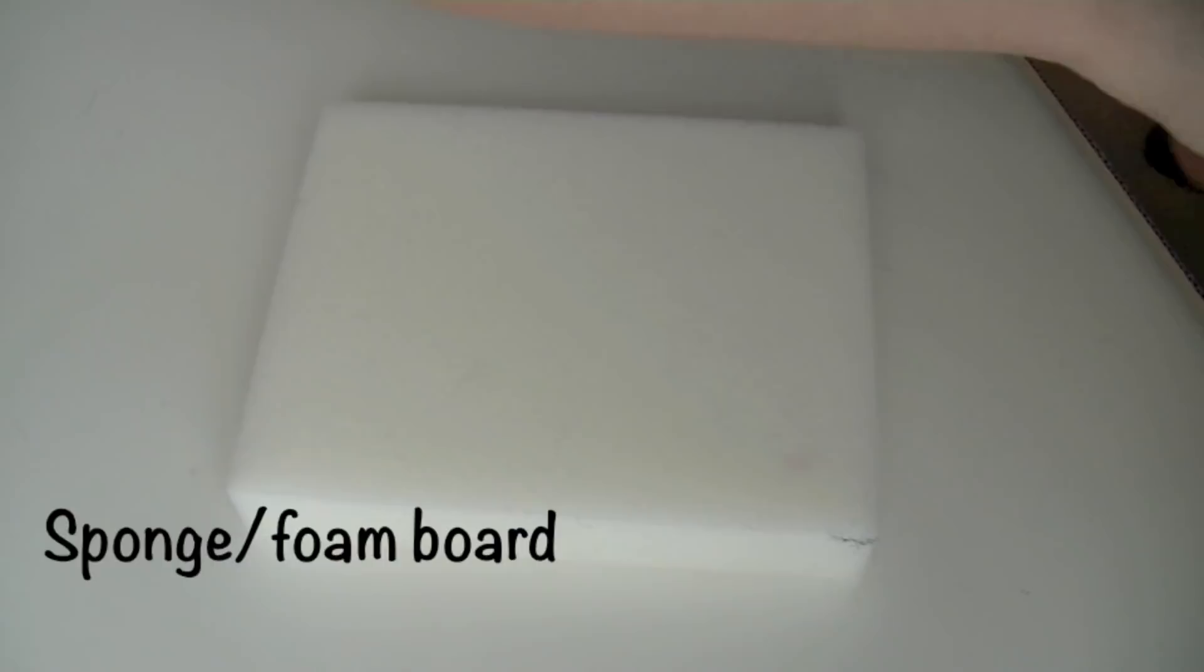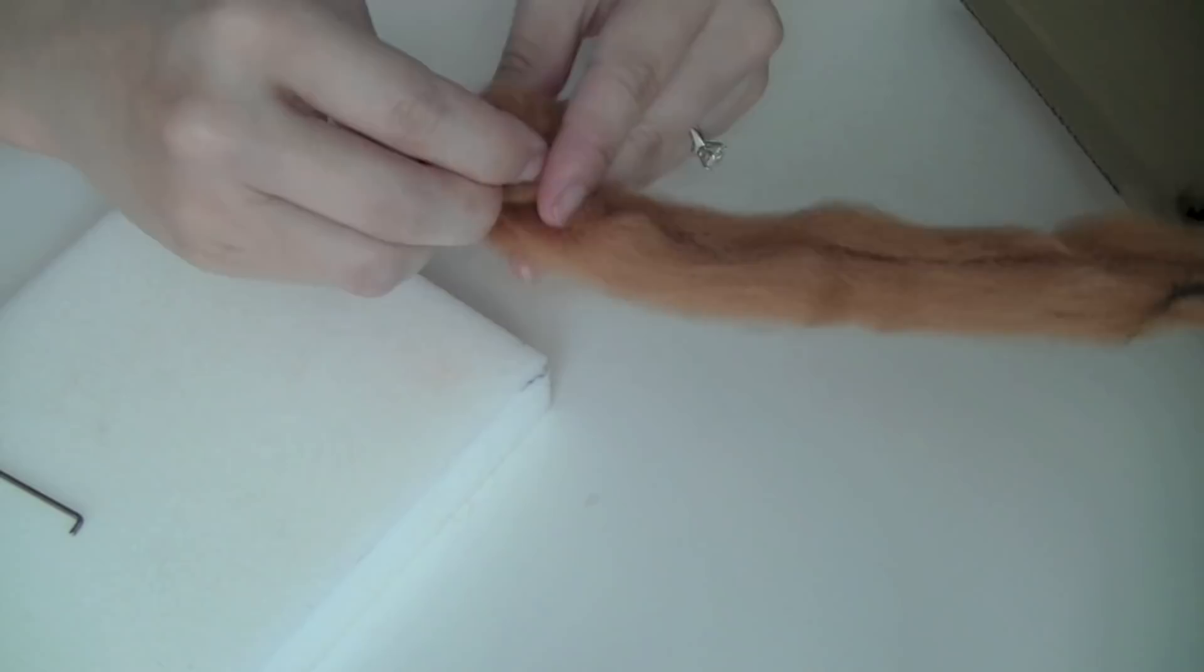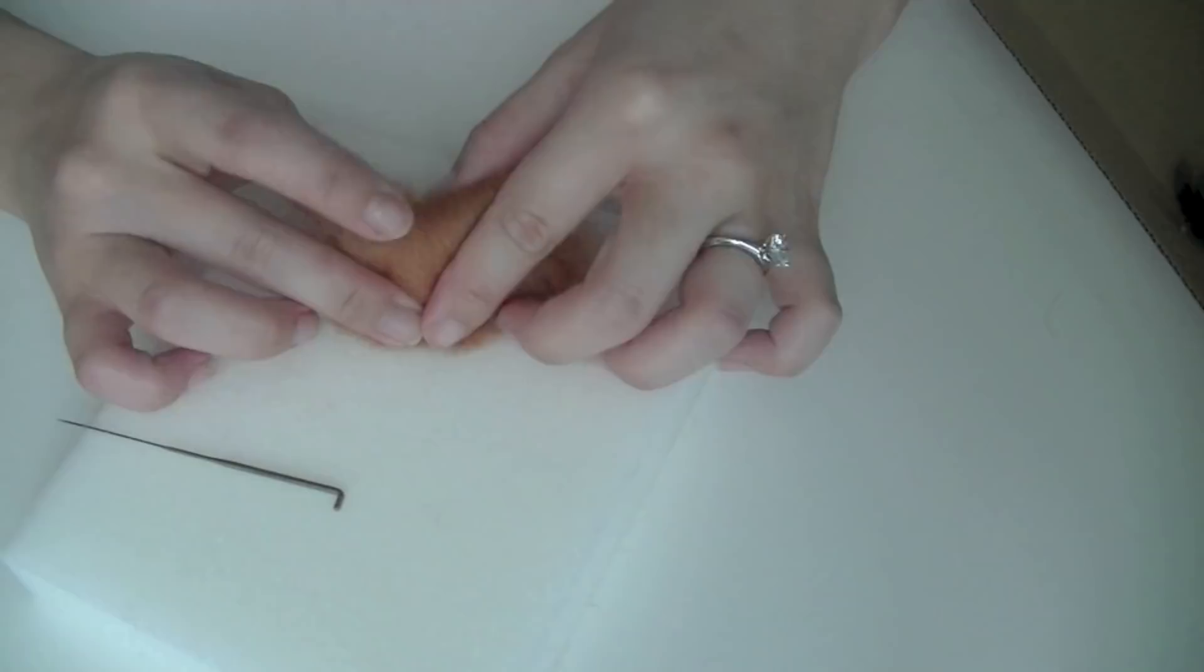So first thing I'm going to do is I'm going to take the felting wool and I'm just going to roll it with my fingers almost as if I'm making a little ball. So once I'm happy with the amount, I'm just going to separate it with my fingers. So you guys can see that we have some loose ends here and this is where you start pricking because you want to secure this part.